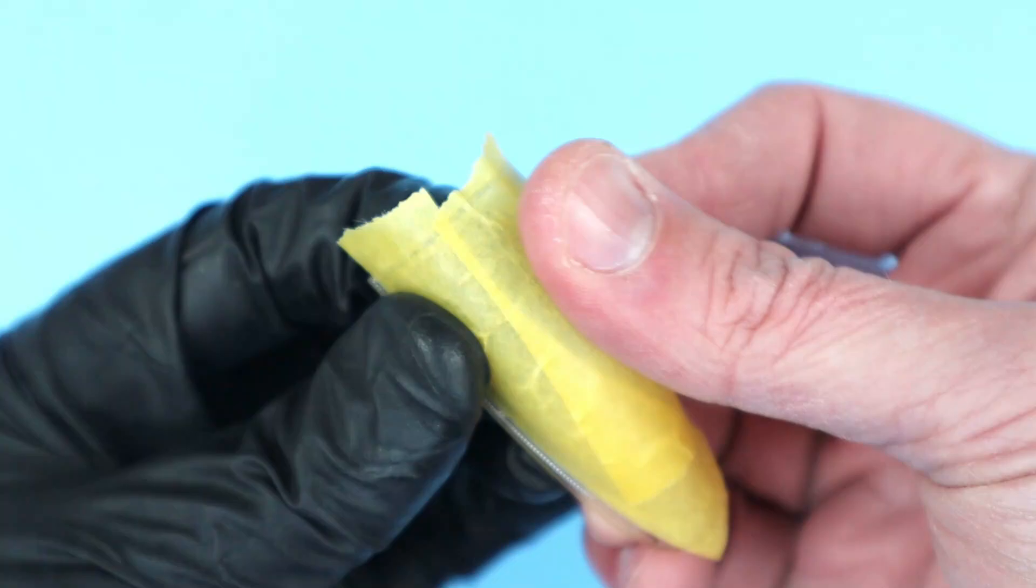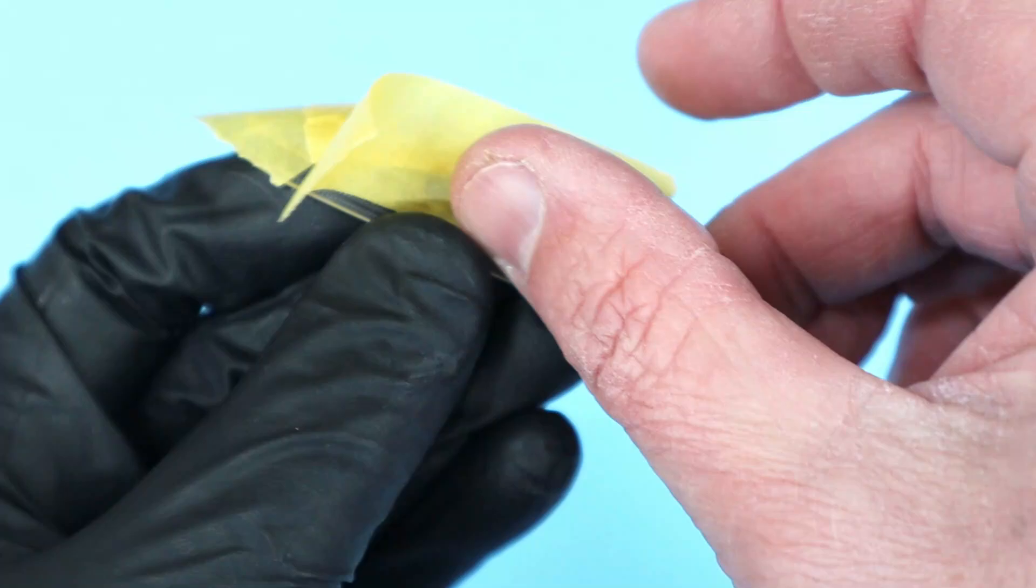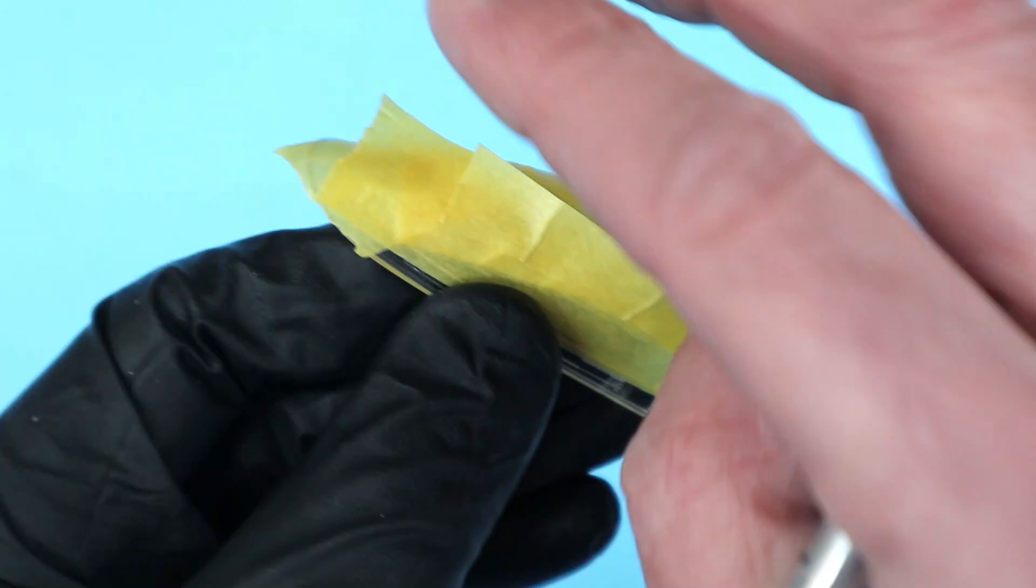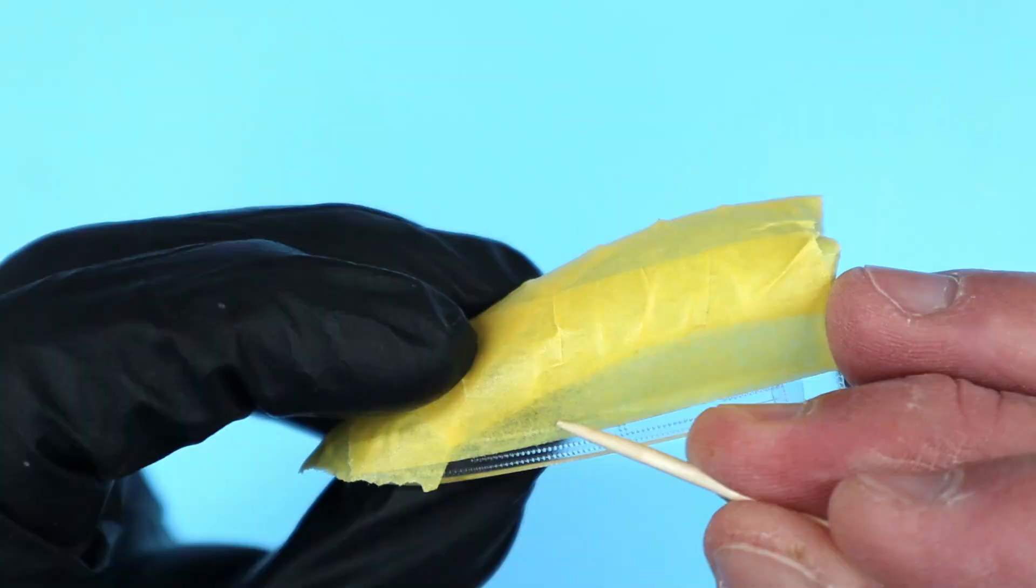I add the tape to the top of the canopy and again burnish it down. Finally, I add the tape to the other side, making the slits in the tape to allow it to better conform to the compound curves.